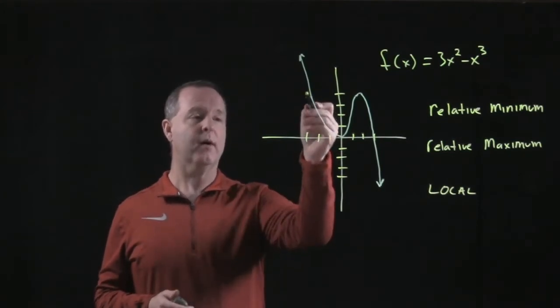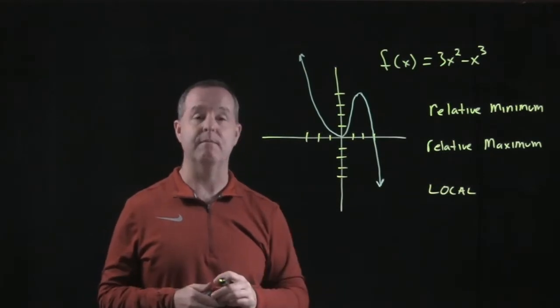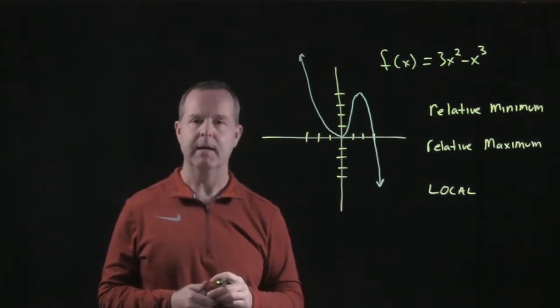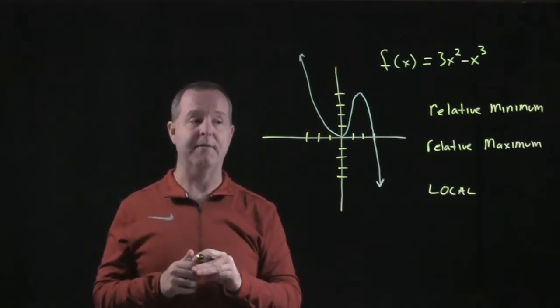Basically, anywhere where the graph turns and changes directions, at that point, it's either a relative minimum or a relative maximum, meaning that in a small area, that's the lowest spot that that graph goes.